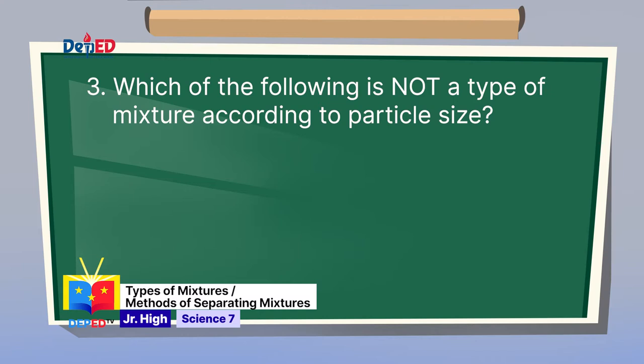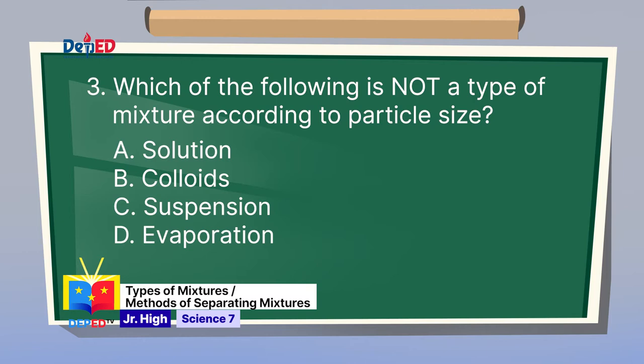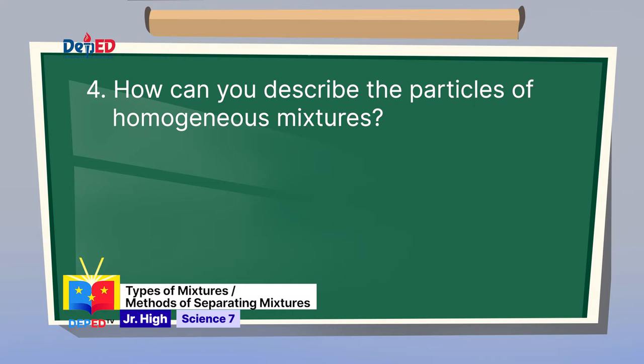Number 3: Which of the following is not a type of mixture according to particle size? A. Solution. B. Colloids. C. Suspension. D. Evaporation. Solutions, colloids, and suspensions are types of mixtures according to particle size. Among the choices, evaporation is not a type of mixture. The correct answer is letter D.